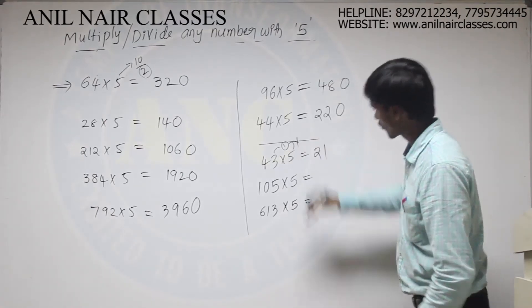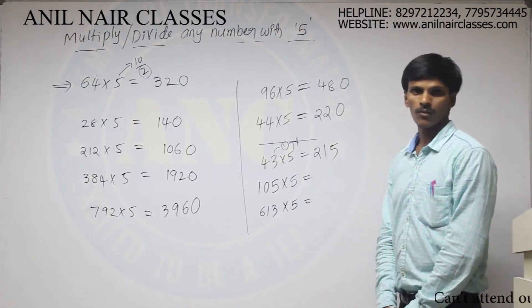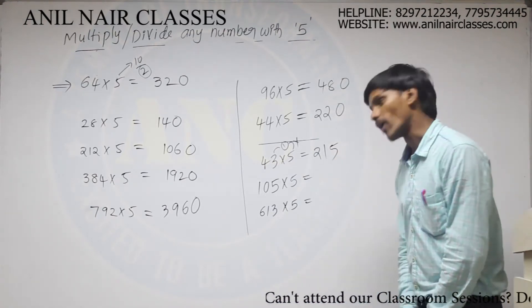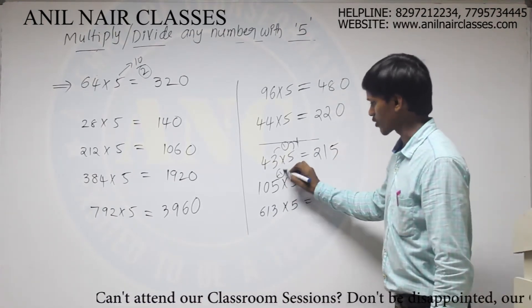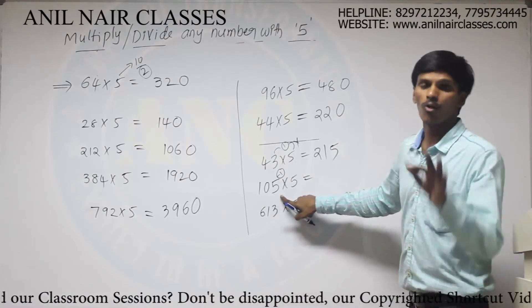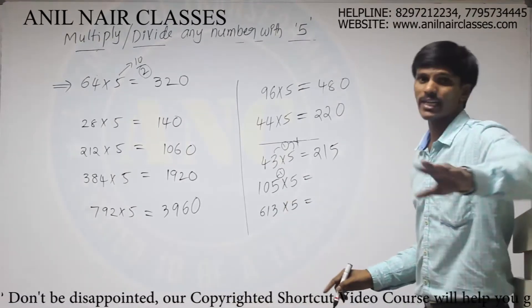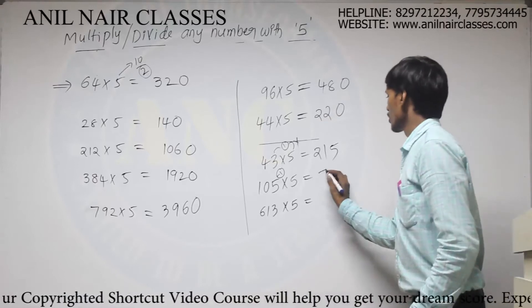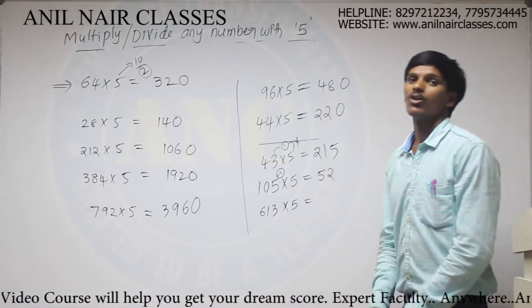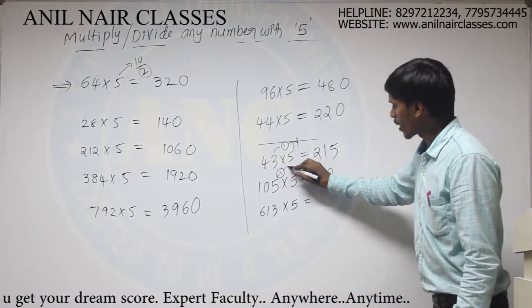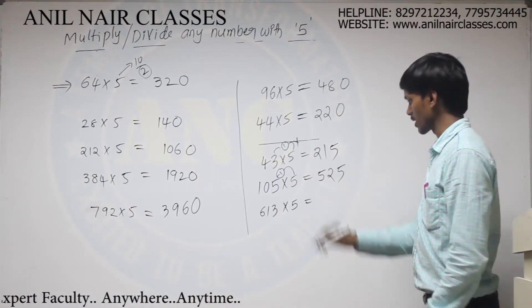Remaining number will be 42. Half of 42 will be 21. And multiply the remainder with 5. So here also, remove that 1. Remaining number will be 104. 104 is perfectly divisible by 2. So half of 104 will be 52. And remainder into 5, it will be 5.